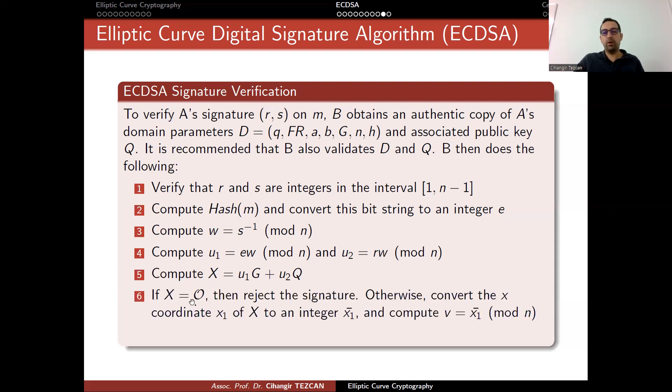If this point is the point at infinity, then you reject the signature. Otherwise, you convert the x-coordinate of this point, which is x1, to an integer x1 bar and compute modulo n value of it. You end up with a value v. You accept the signature if and only if v equals to r.